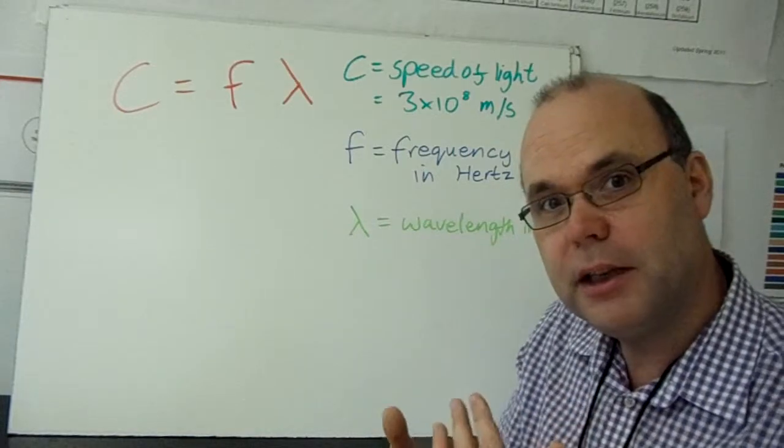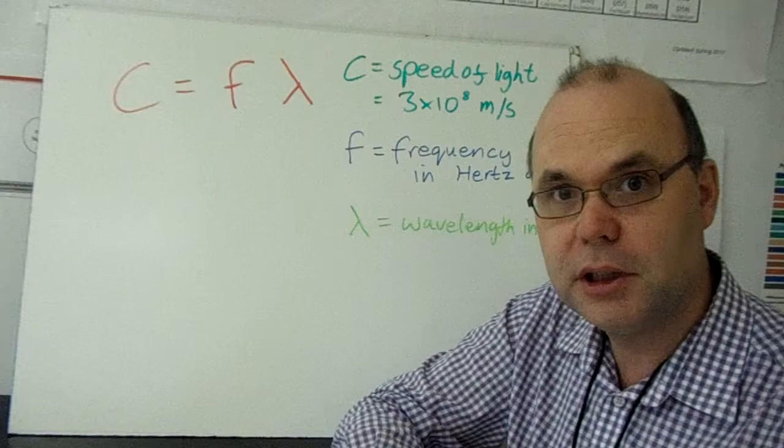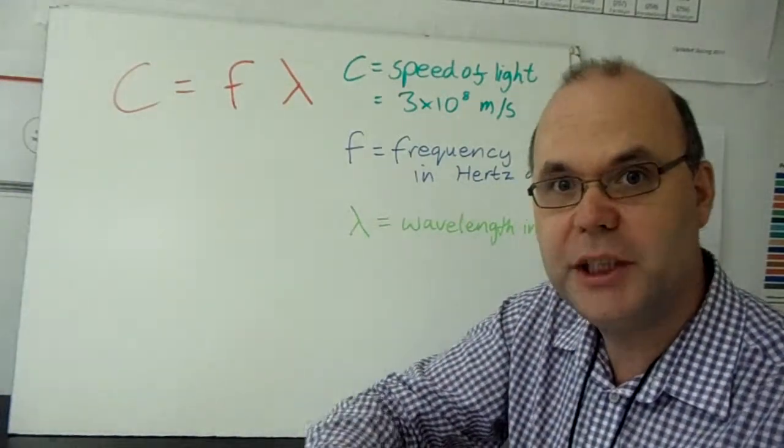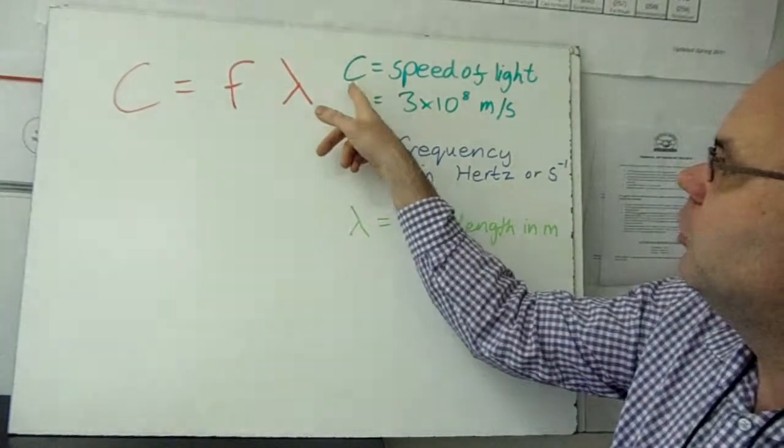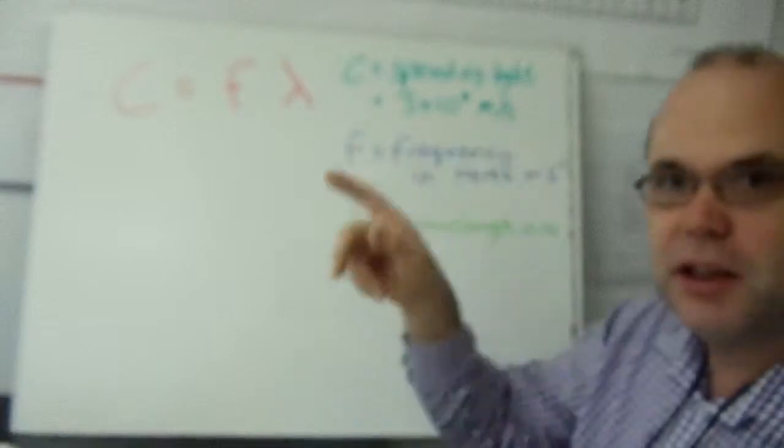And if you think about it, that all depends on how fast the waves are moving in the first place. Now with light waves, they all move at the speed of light, known as C. It's 3 times 10 to the 8 meters per second.